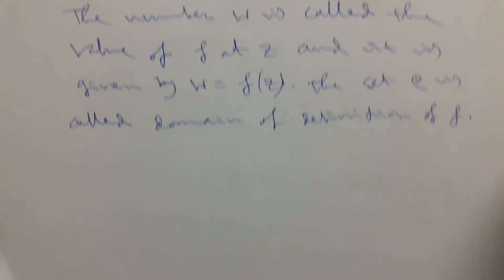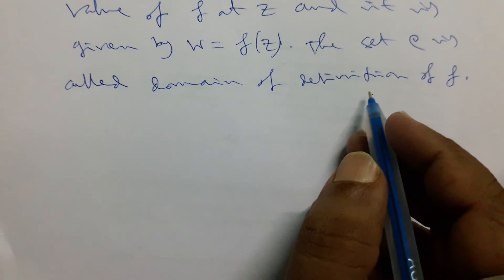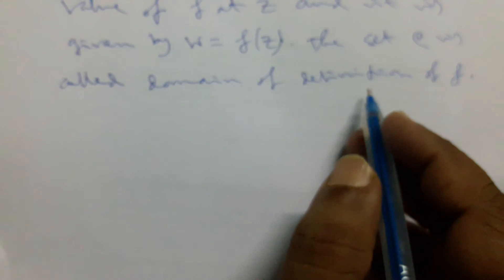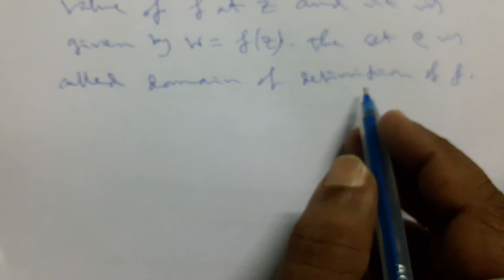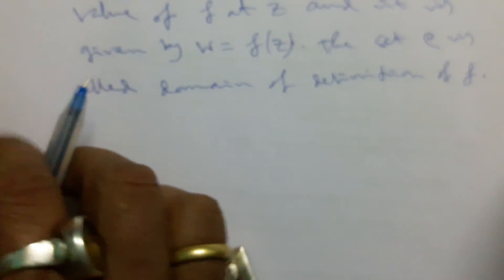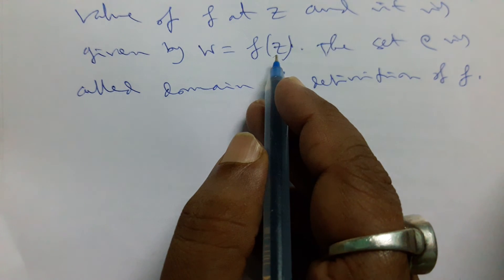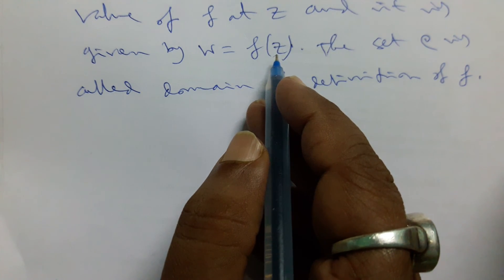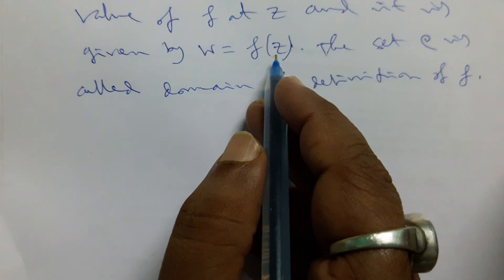Now here, every complex number system can be represented in Argand diagram or Argand plane. Let us suppose if it is a complex value function, then that can be written in the form of x plus iy.